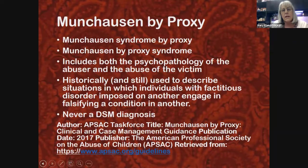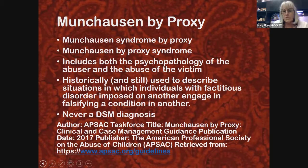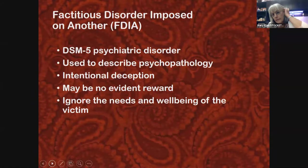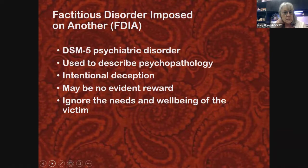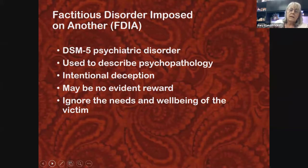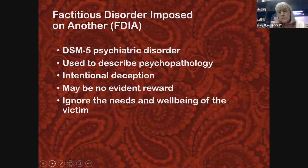Munchausen by proxy is not a DSM diagnosis — it never has been. If I'm making a formal diagnosis I don't use that term, though I might use it when talking to people informally. The actual DSM-5 diagnosis for the perpetrator is Factitious Disorder Imposed on Another, which describes the psychopathology. There has to be intentional deception, and that is certainly true in these cases.